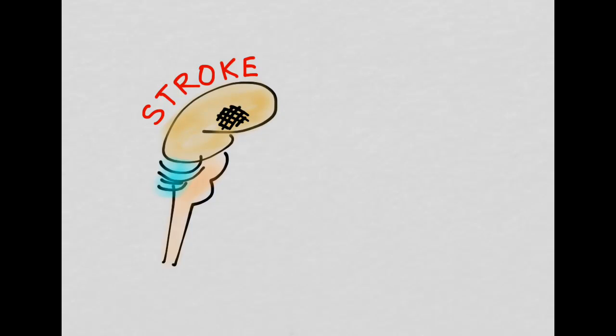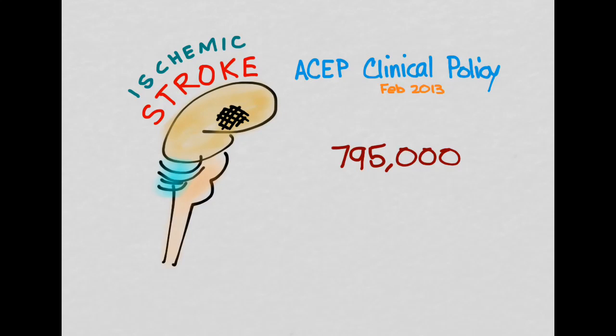In this next series of videos, we're going to be talking about stroke, specifically ischemic stroke. And the ASAP clinical policy on the treatment of ischemic stroke from February 2013 claims that there are 795,000 new strokes a year.